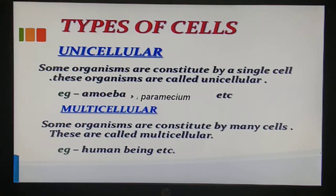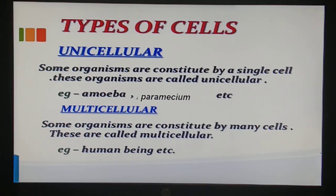Depending upon the number of cells, we have two different kinds of organisms. First is the unicellular organism and second is the multicellular organism. Some organisms are constituted by a single cell and are called unicellular - for example amoeba, paramecium, and yeast. 'Uni' means single; this single cell performs each and every function, so there is no division of labor. The lifespan of an individual is short in case of unicellular organisms.